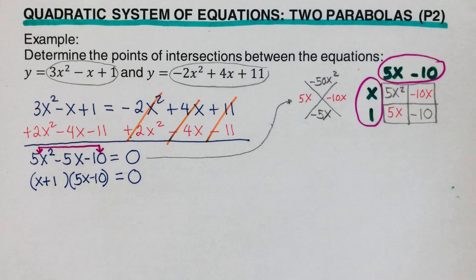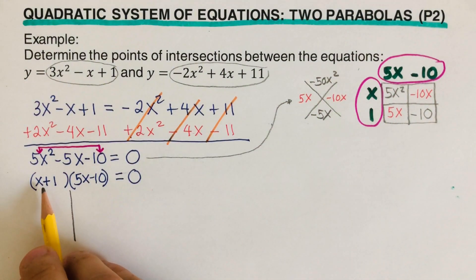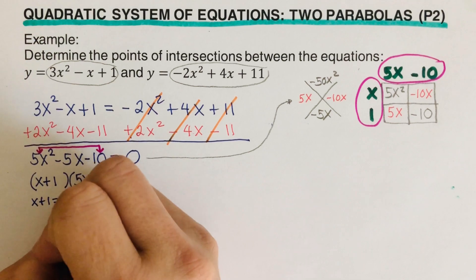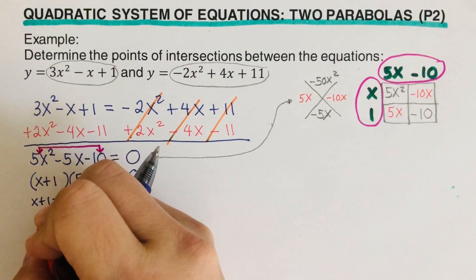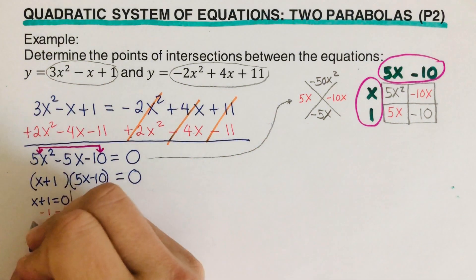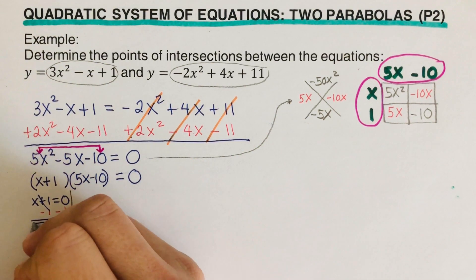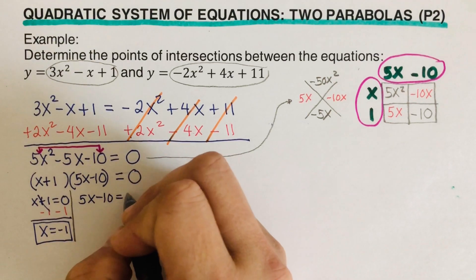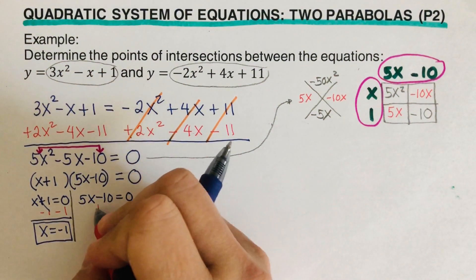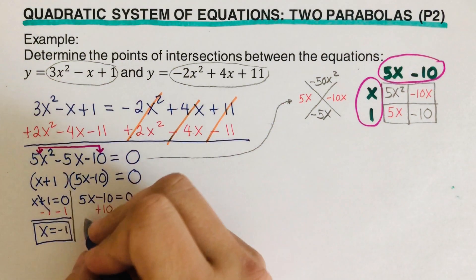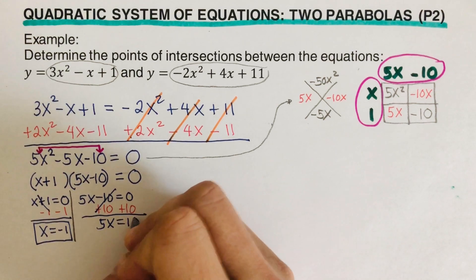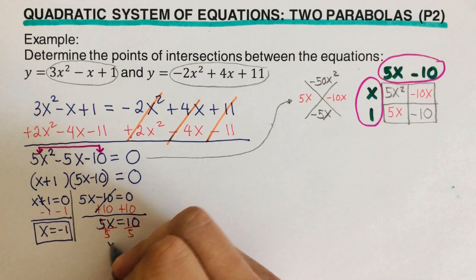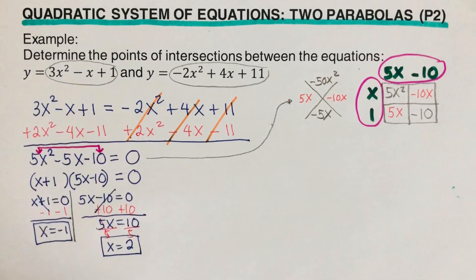Using the zero product property, we set each factor equal to zero and solve for x. For x plus 1 equals 0: subtract 1 from both sides, giving x equals negative 1. For 5x minus 10 equals 0: add 10 to both sides giving 5x equals 10, then divide both sides by 5, giving x equals 2. So the two values of x are negative 1 and 2.